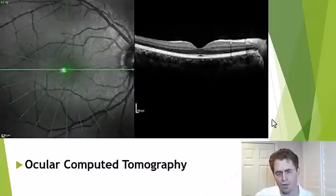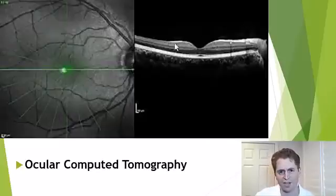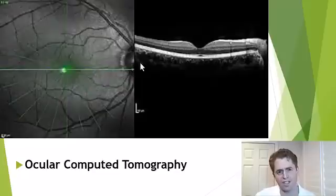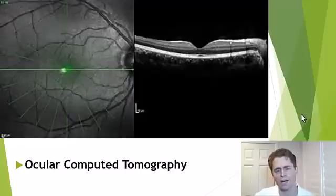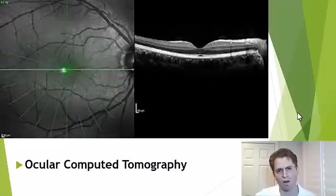This is ocular computed tomography, or OCT — a scan of the eye. Here you see the divot of the macula, the optic nerve, and the blood vessels. Thinning of the retinal nerve fiber layer is correlated with worsening visual function, although the correlation between OCT and overall MS disability is not that strong.